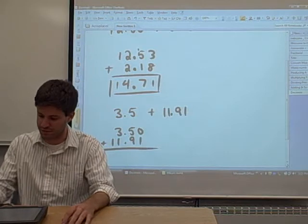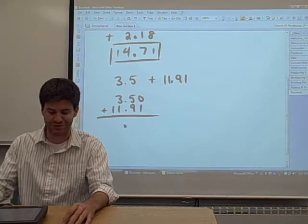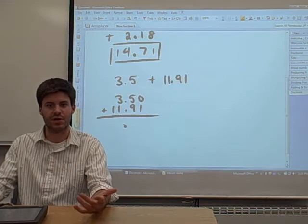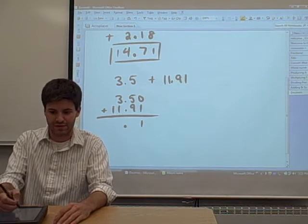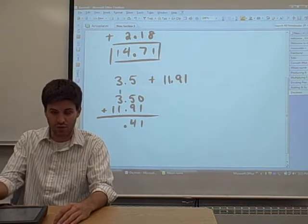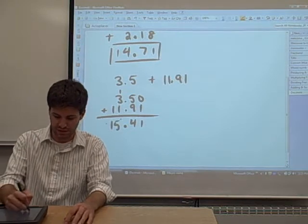So, we're going to add those two numbers together. The decimals are lined up, so now it just becomes a problem where we're just adding two numbers. So, 0 plus 1 is 1. 5 plus 9 is 14, carry the 1. Over here you get a 15. And that's your answer.